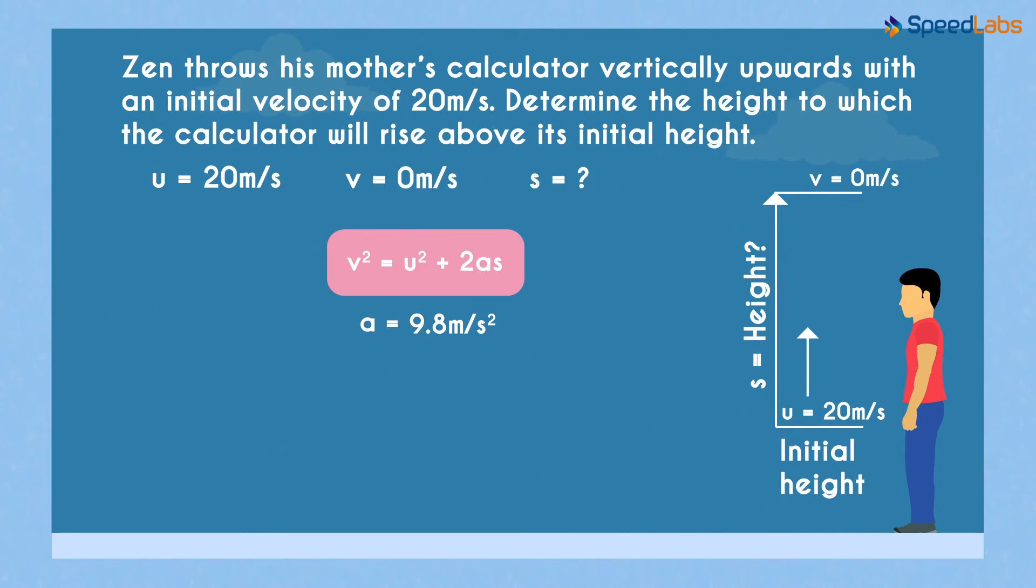In this example, the velocity is in the direction opposite to the acceleration. Velocity is upwards and the acceleration is downwards.